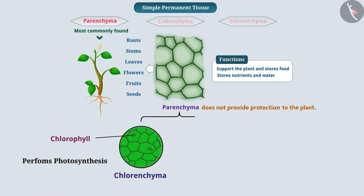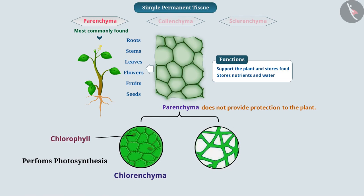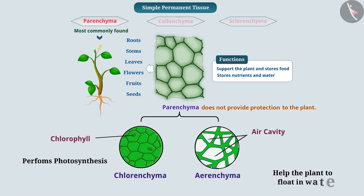Similarly, the parenchyma tissue which has large air cavities in their cells is called aerenchyma. Air cavities help the plant to float in water. Therefore, aerenchyma is present in aquatic plants.